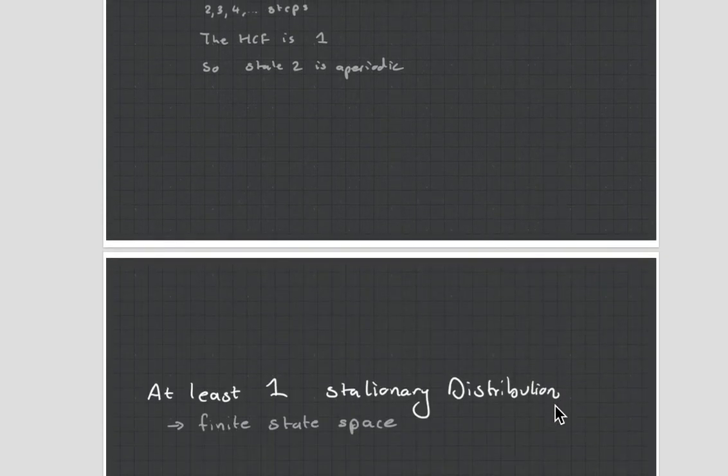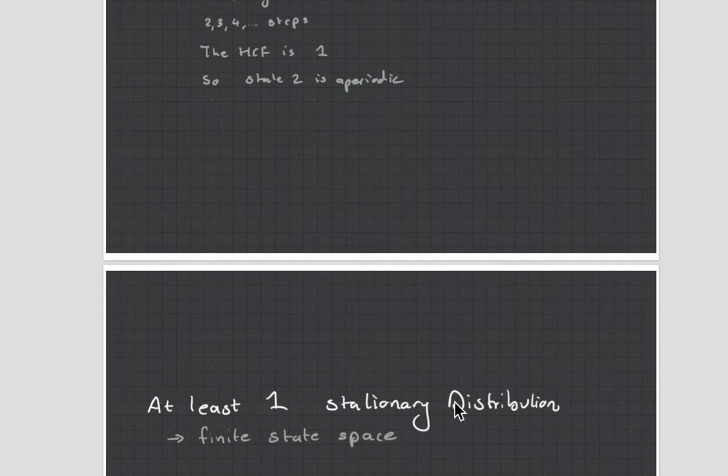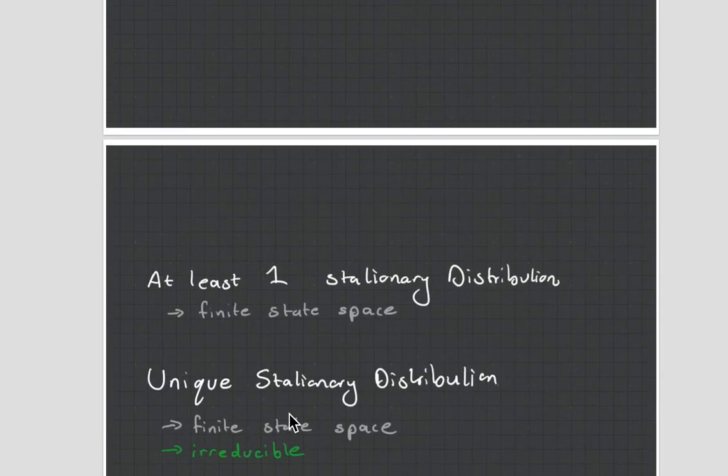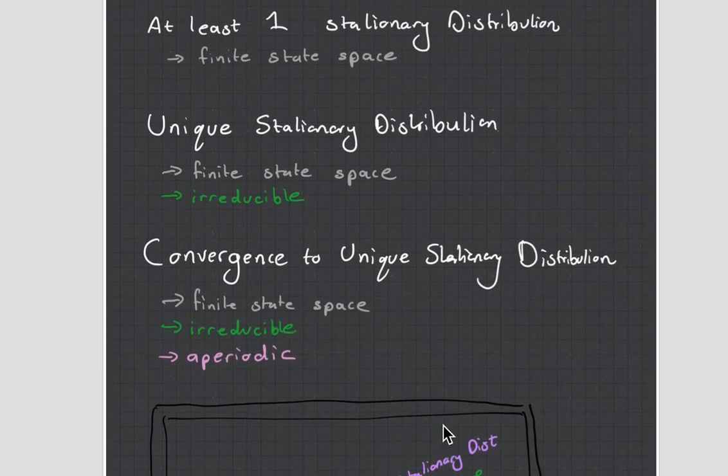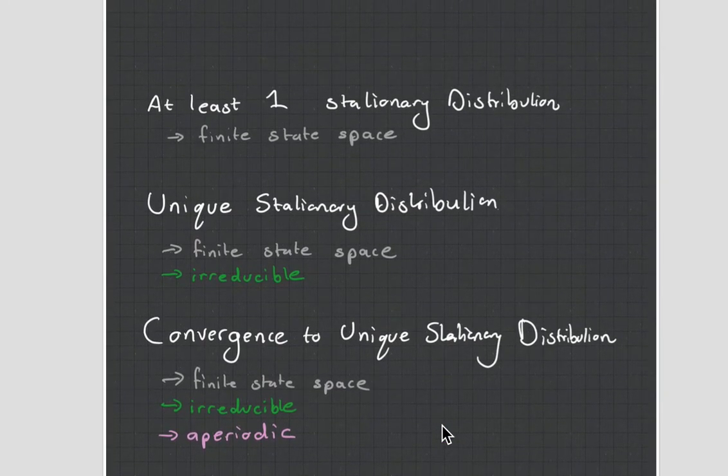Now why do we care about this? If our Markov chain has a finite state space, then it will have at least one stationary distribution. If it has a finite state space and is irreducible, then we know that it has a unique stationary distribution. However, if it has a finite state space, it is irreducible and is aperiodic, then we will know that it will converge to the unique stationary distribution.